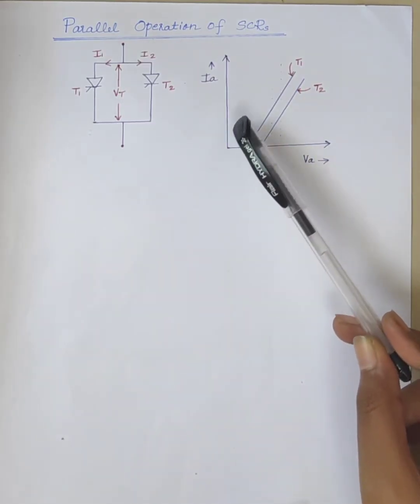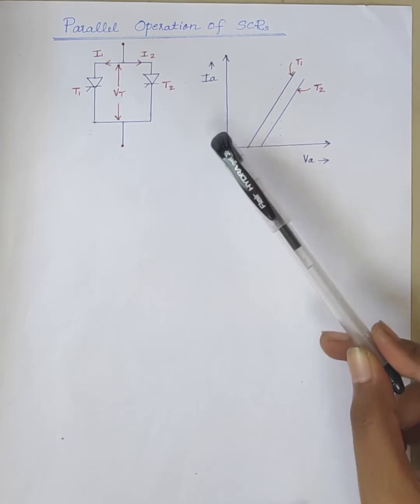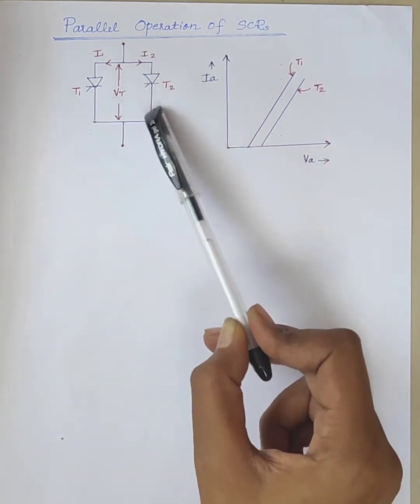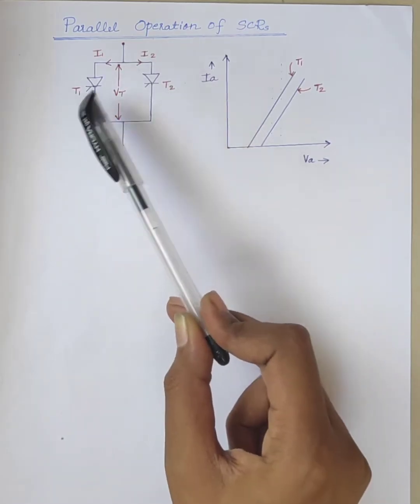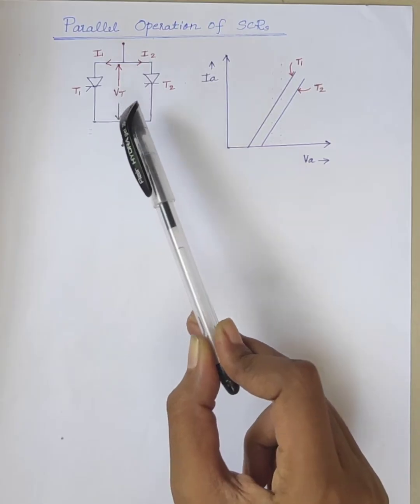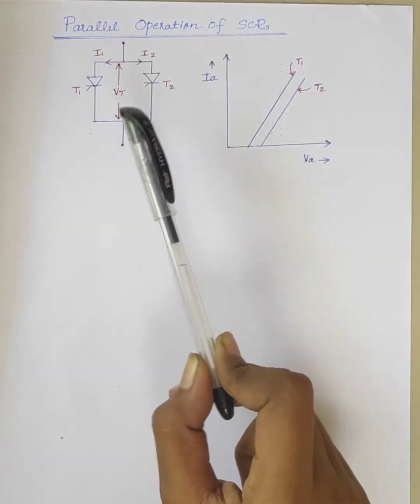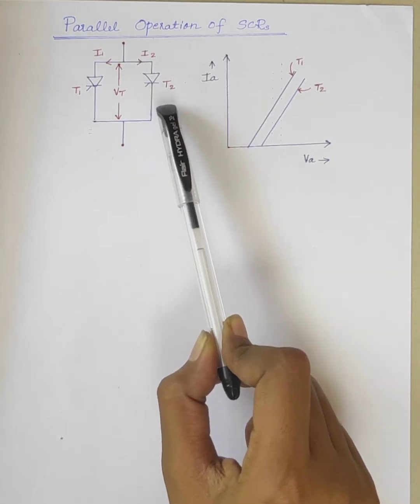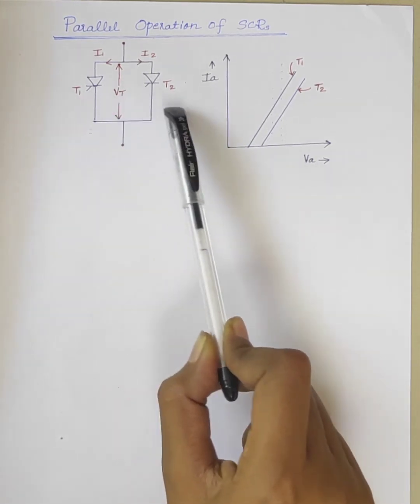Whenever the load current requirement is more than the current carrying capacity of a single SCR, two or more SCRs are connected in parallel to form a string. For example, here two SCRs are connected in parallel, T1 and T2.